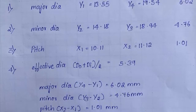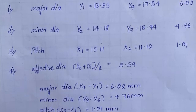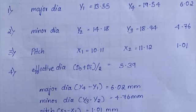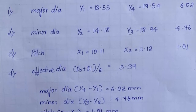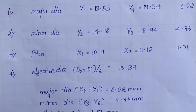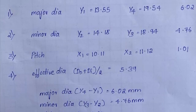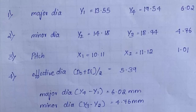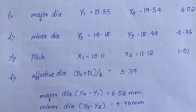Effective diameter, do plus di by 2 is equal to 5.39. After tabulating all these values, you can write major diameter with the actual value you've gotten, pitch also you have to write it down, and effective diameter, whatever readings you tabulated above, write it down below.